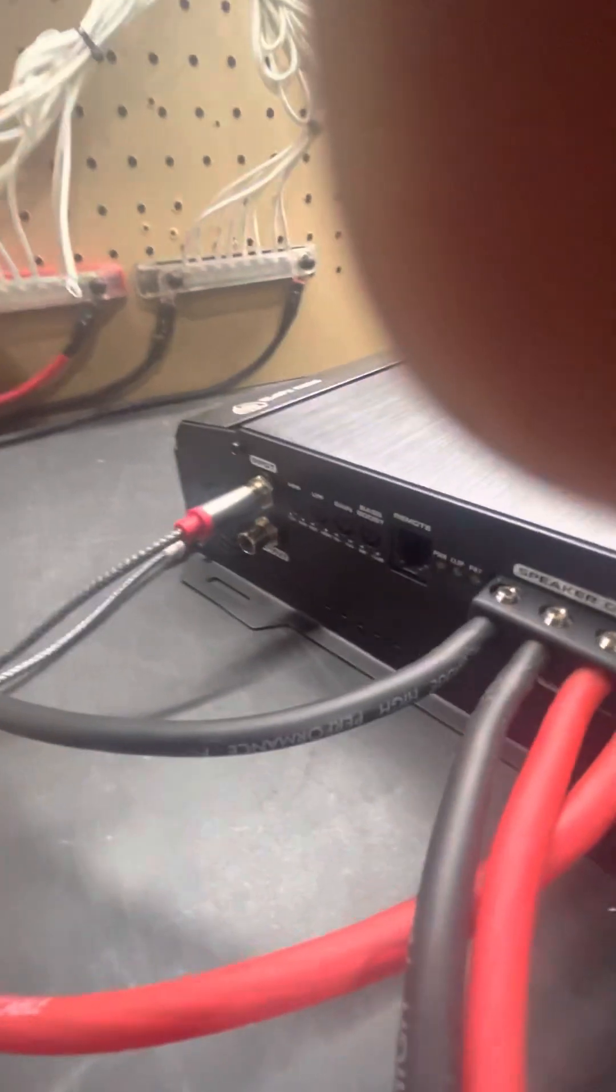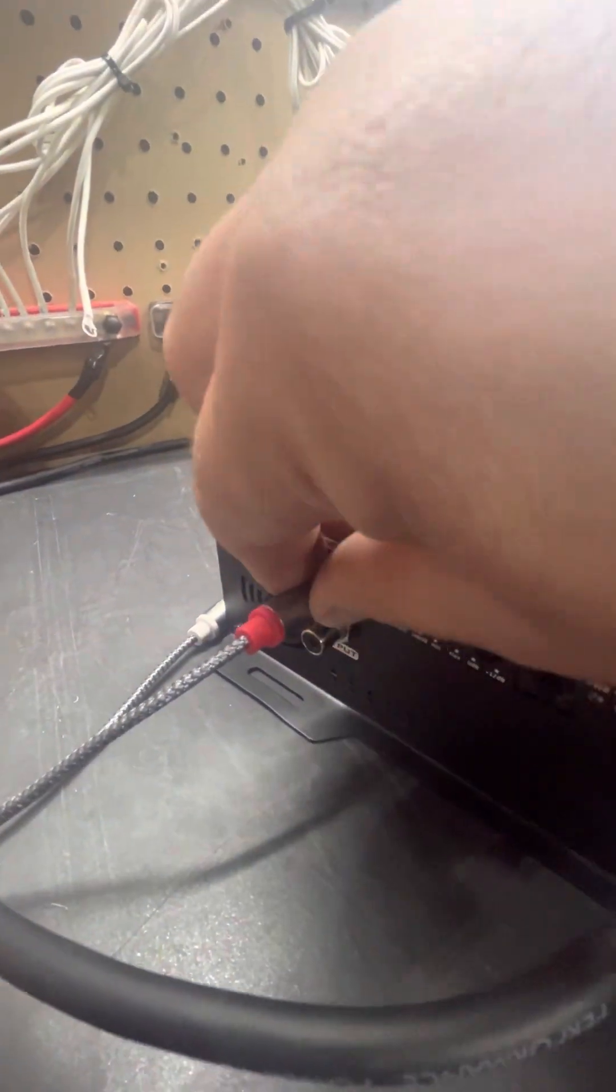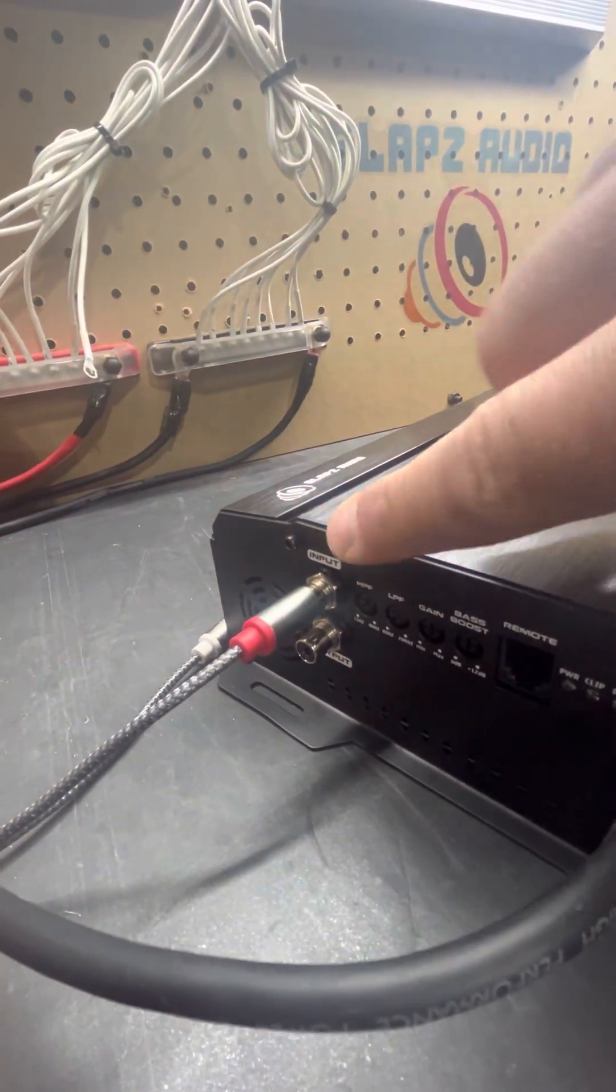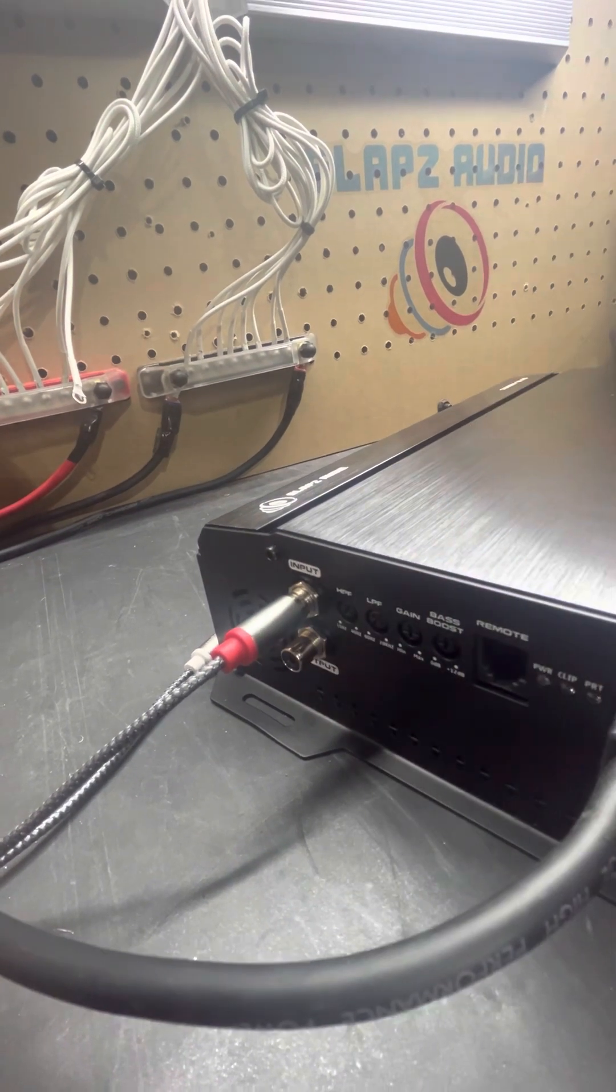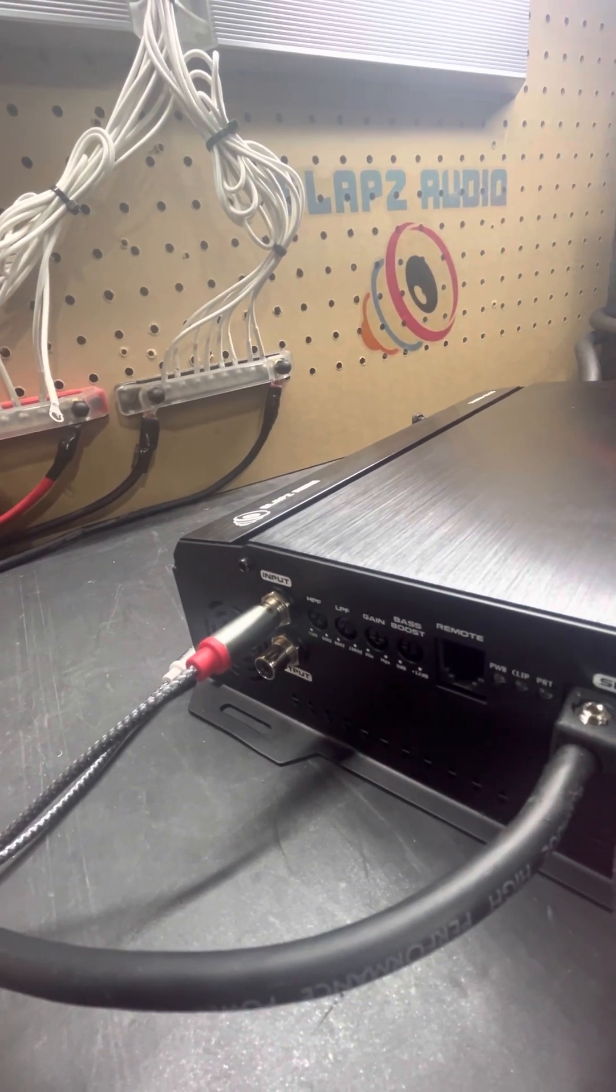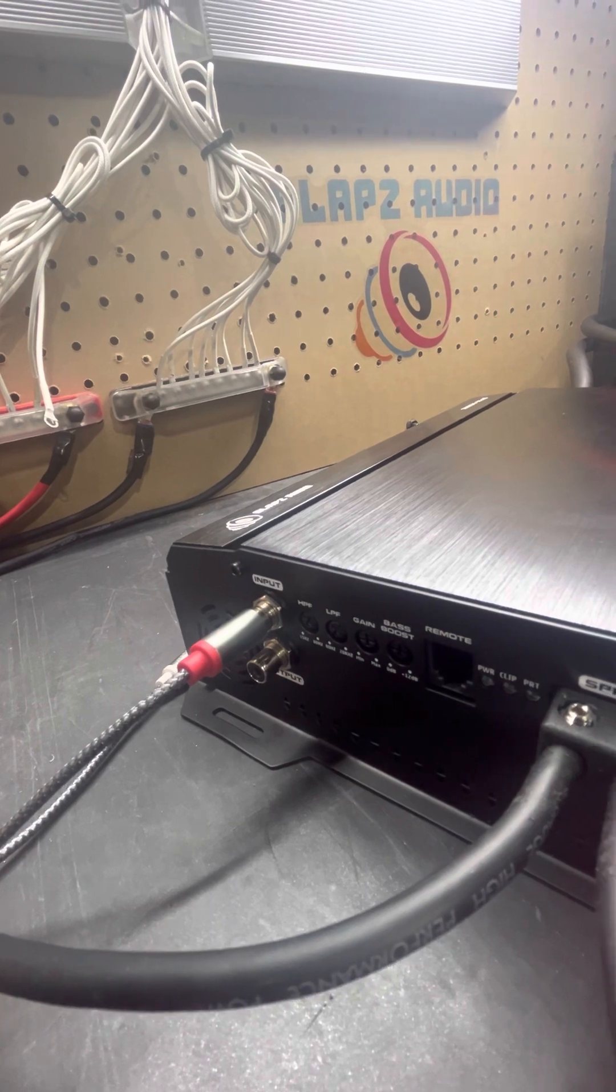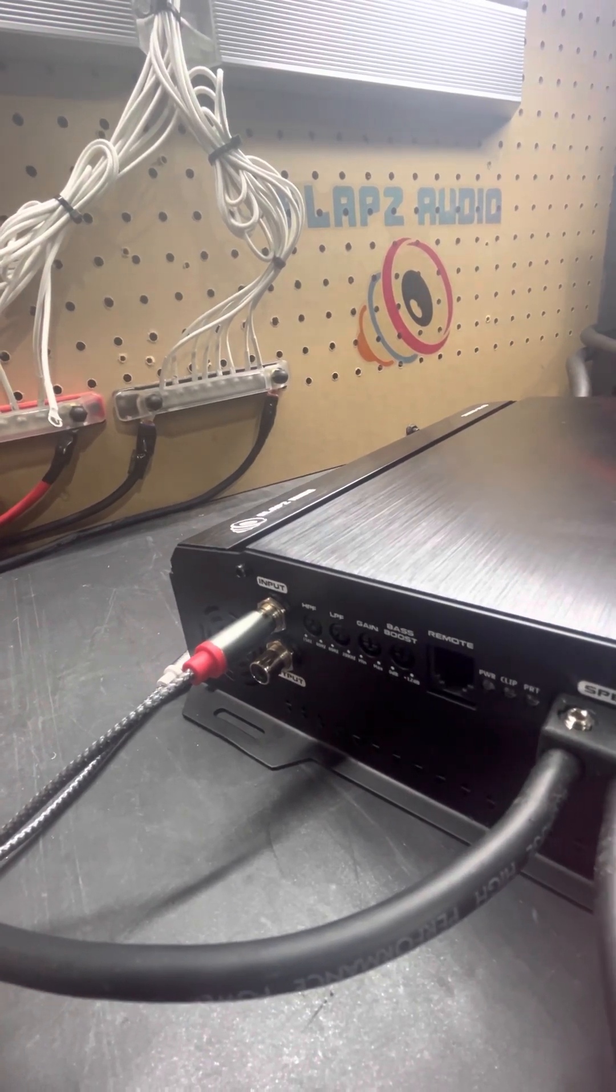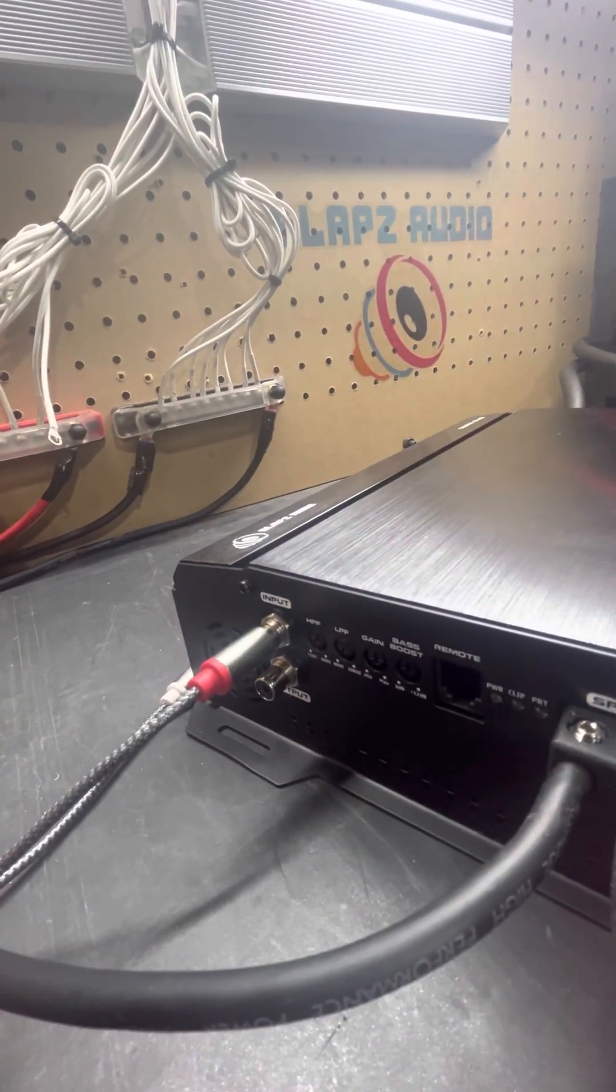As far as the RCA input goes, you only plug into the input of the RCA. This RCA here is an output if you were doing, let's say, two amplifiers and you were going to gain match if you had multiple subs in the same box. You would just jump from here to the other amplifier and that would be it.